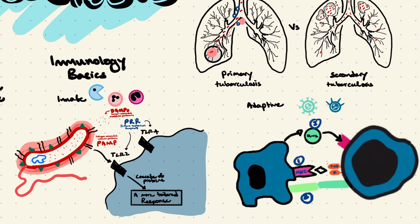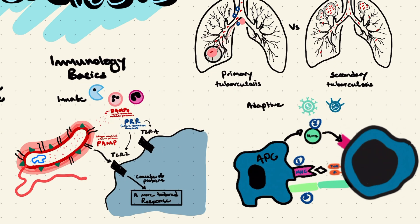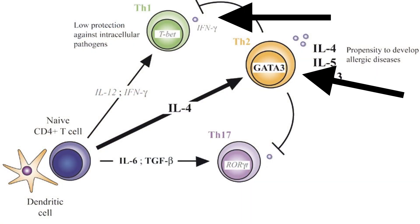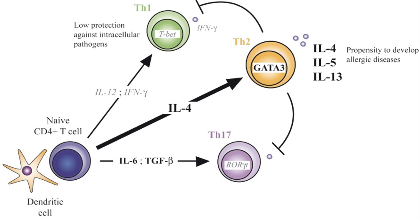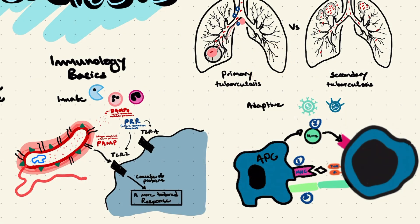Now let's dive into the adaptive immune system. First, we need antigen-presenting cells — like dendritic cells or macrophages — to alert the adaptive immune system of the threat. The antigen-presenting cell engulfs the pathogen, digests it, and presents pieces of the pathogen known as antigens on MHC class 2, presenting them to T-cell receptors. To activate helper T-cells, three signals are required: MHC class 2 with antigen interacting with the T-cell receptor, a co-stimulatory interaction, and a cytokine signal. T-cells then differentiate into Th1, Th2, or Th17 depending on the cytokine signal.